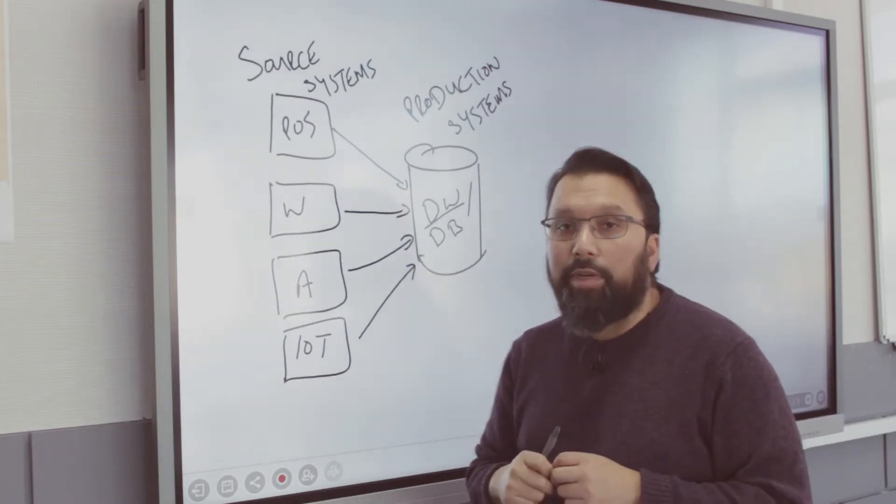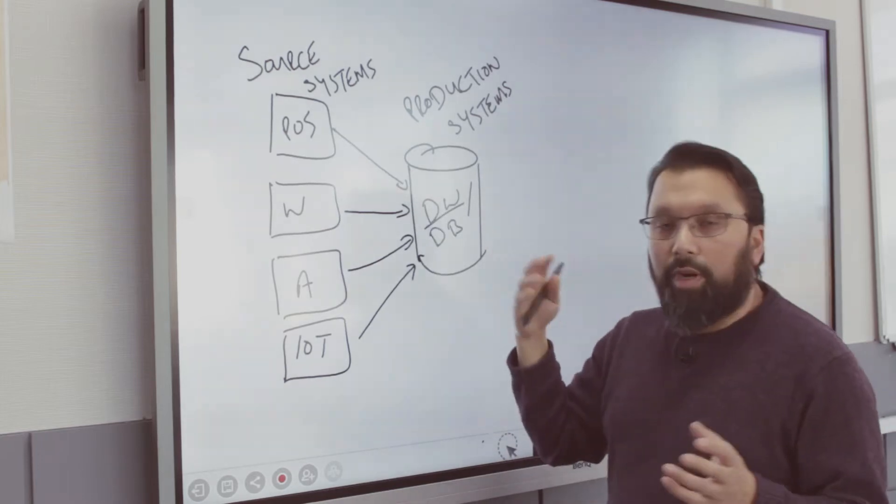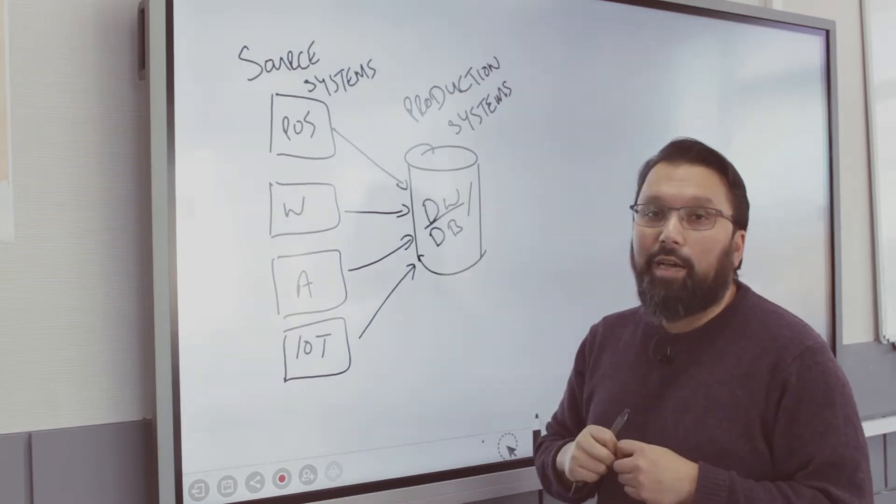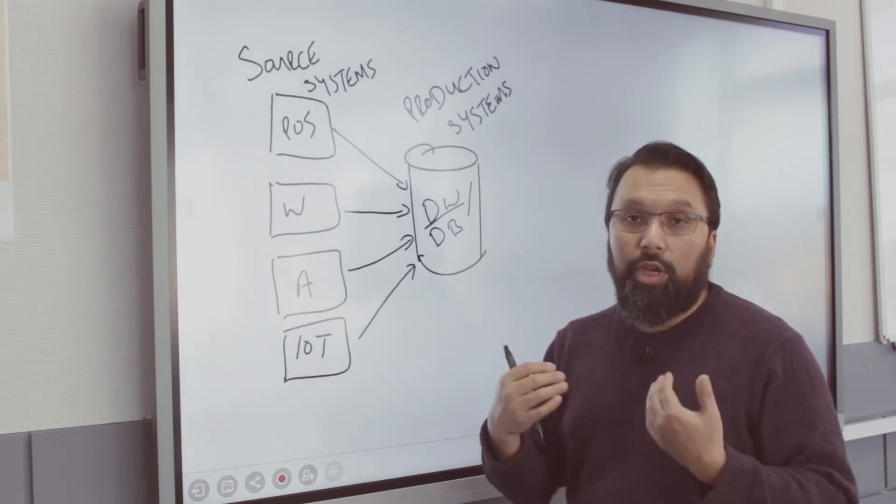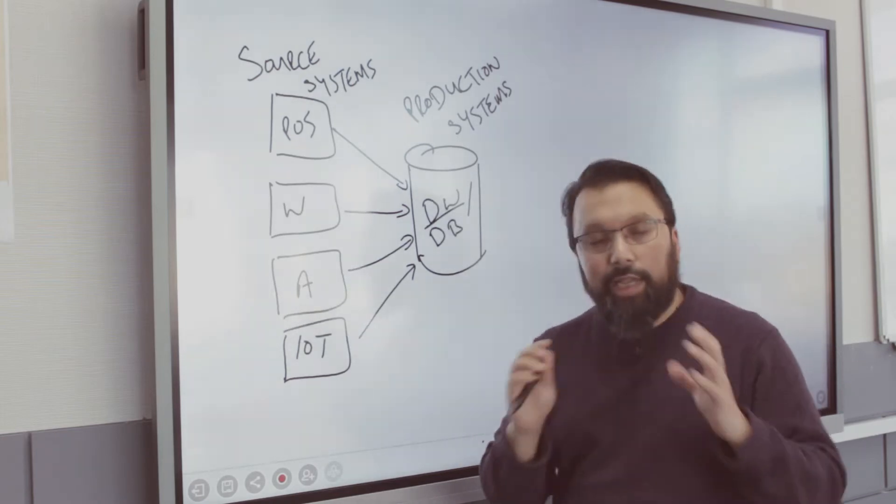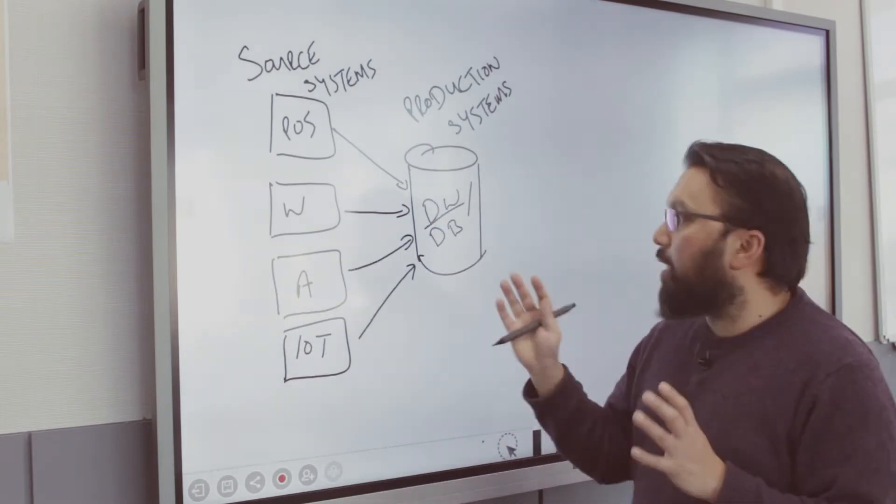But typically, in production systems, the most granular data that's been collected is usually stored in there. It's very rare that companies will do any kind of pre-processing of that data, because the production system is really there to receive the raw data coming in. Like I said, some companies do, but typically they won't.